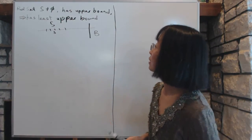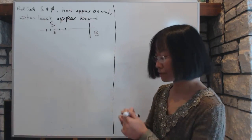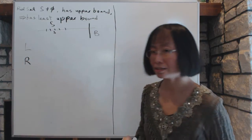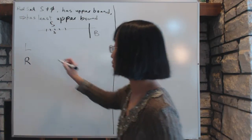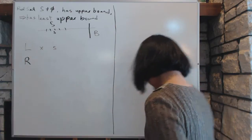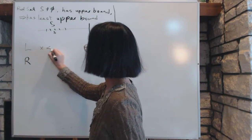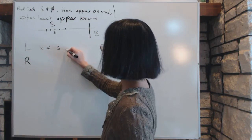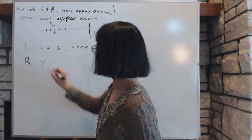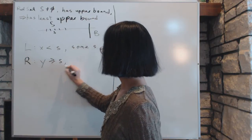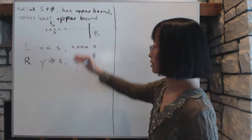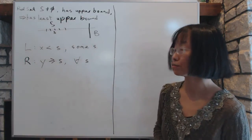To show there's a least upper bound, we go about it using the axiom of continuity, which means we have to define L and R — two sets that satisfy the conditions of the axiom. We call L to be the set of x such that x is less than s for some s in the set. And R is the set of y such that y is bigger than s for all s in the set. The definition of these two sets are mutually exclusive and includes all real numbers, which is a requirement of the axiom of continuity.